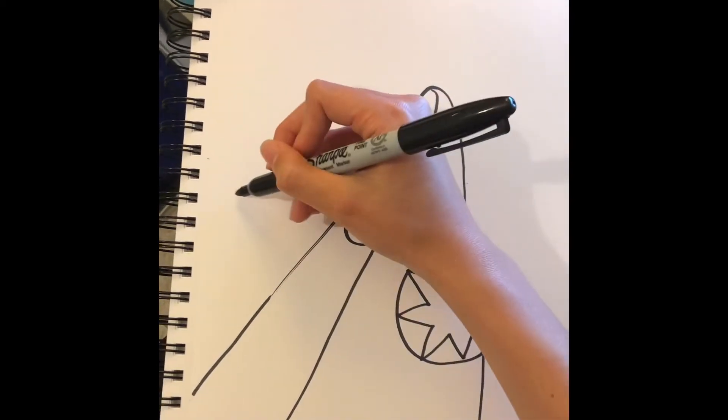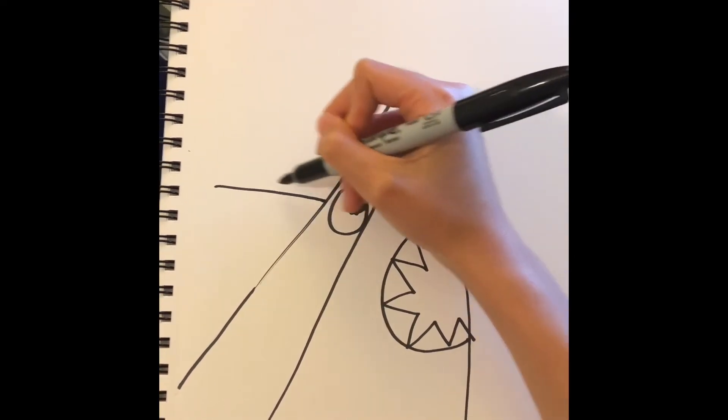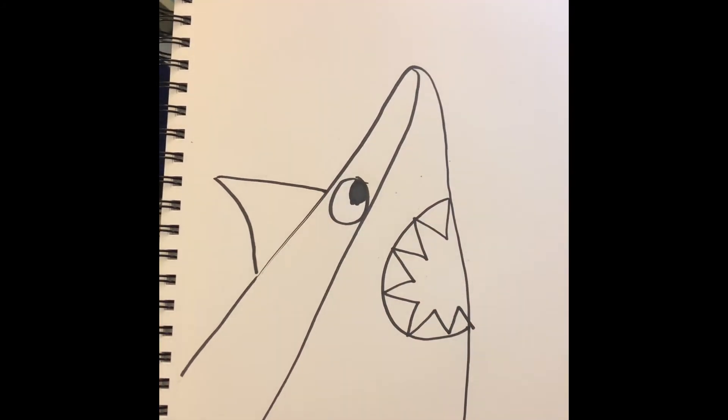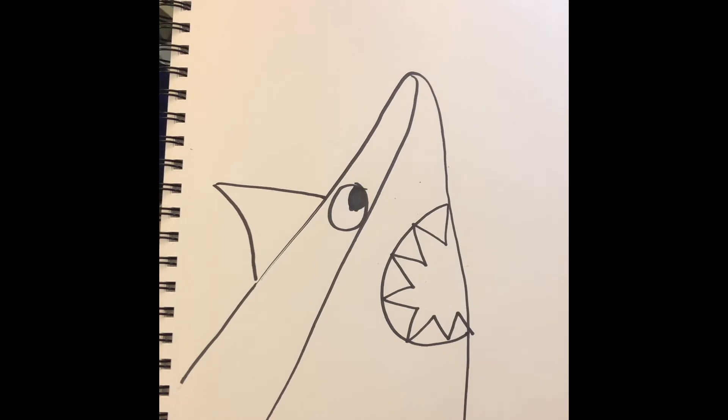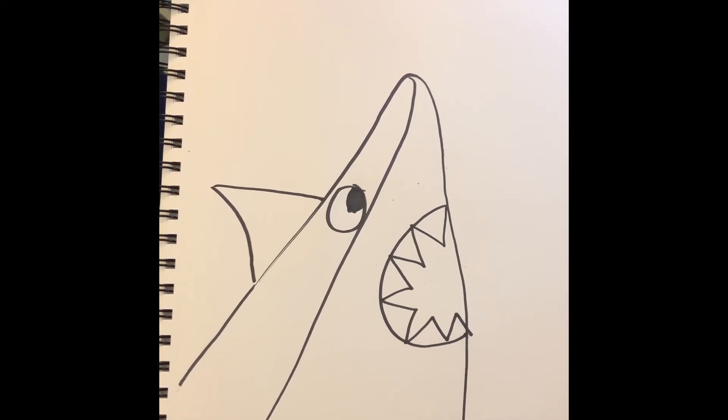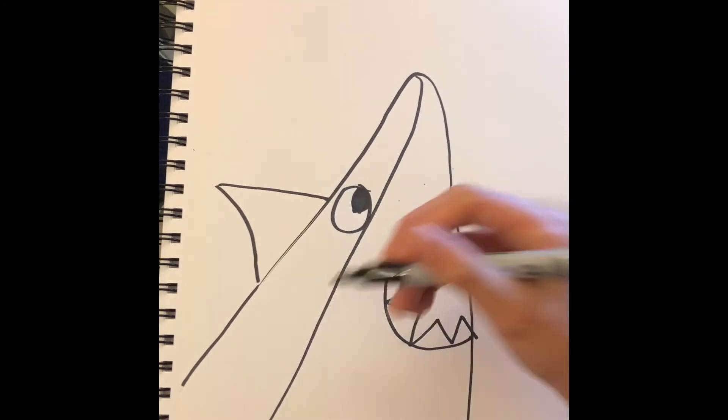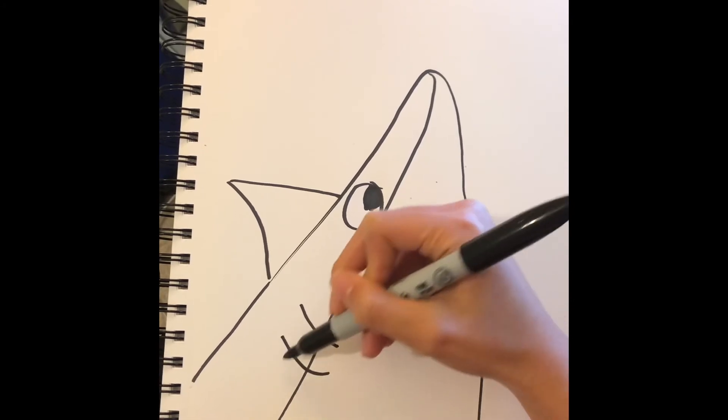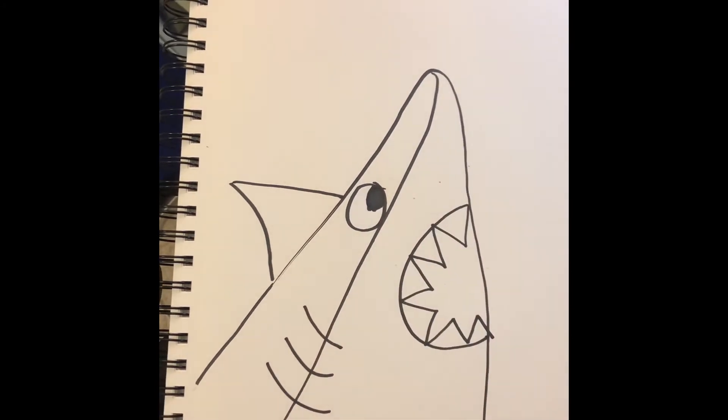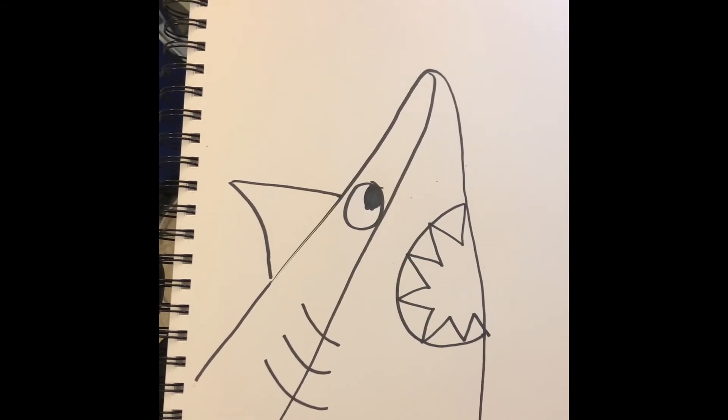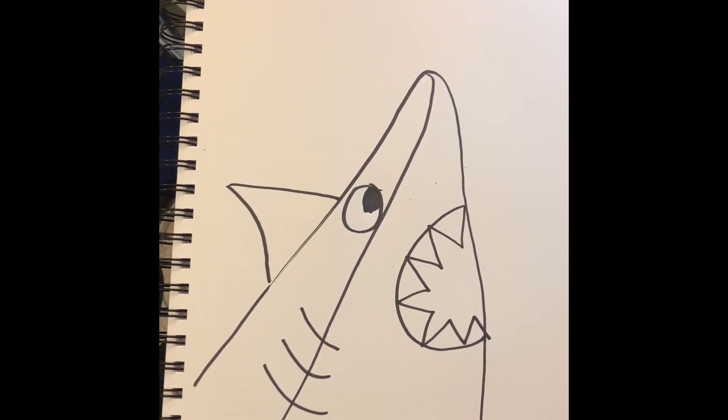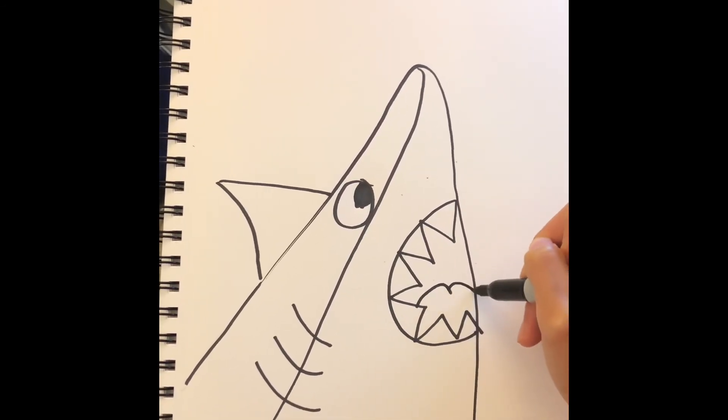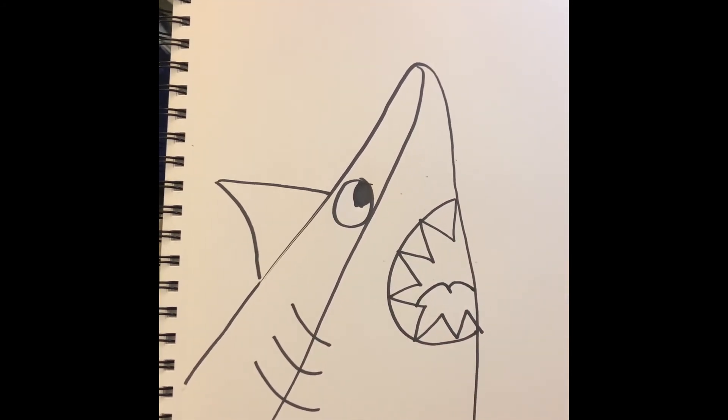Now we're going to add the fin. The fin is just a nice triangle shape. But you can make the bottom line a little rounded so it looks like he's coming up. And lastly, just add the gills and the tongue of the shark. For the gills, I just added a few lines. And the tongue was like an upside down W. Okay, now you're done with the shark.